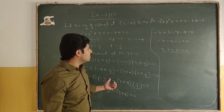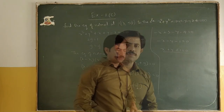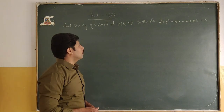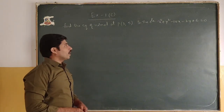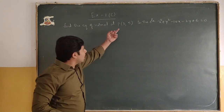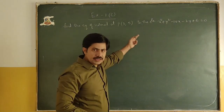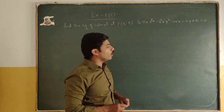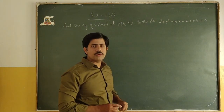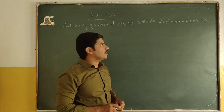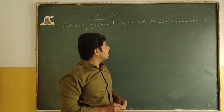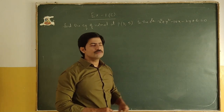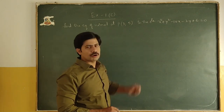This problem is complete. Next problem — try this: find the equation of normal at (3, 5) to the circle x² + y² - 10x - 2y + 6 = 0. Try this problem.